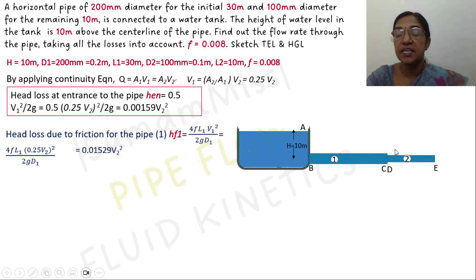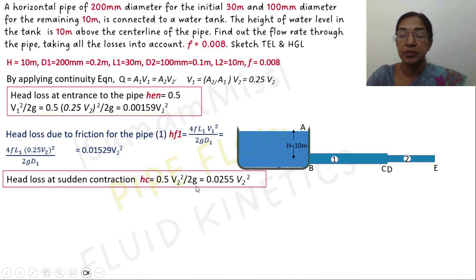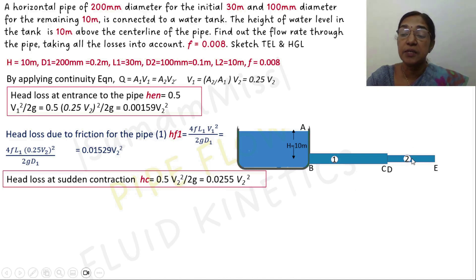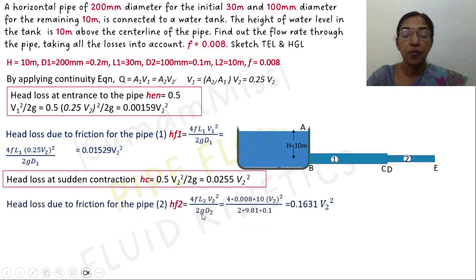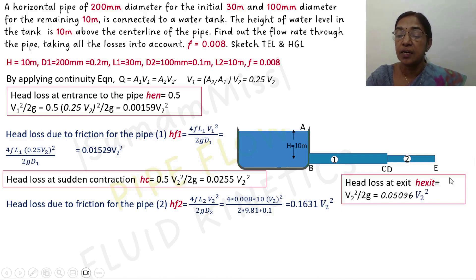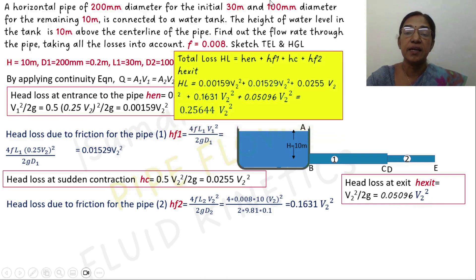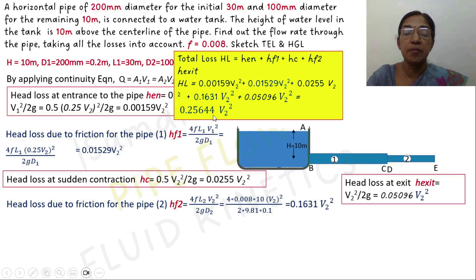The contraction loss at section D is 0.5 V2²/(2g), giving hc = 0.0255 V2². The friction loss for pipe segment 2 is 4fL2V2²/(2g·D2), obtained as 0.1631 V2². The exit loss equals V2²/(2g) = 0.05096 V2². Summing all losses — entrance loss, friction loss in pipe 1, contraction loss, friction loss in pipe 2, and exit loss — gives a total of 0.25644 V2².